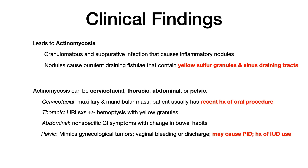Actinomycosis can be cervicofacial, thoracic, abdominal, or pelvic. On your exam, it's very likely they go after cervicofacial actinomycosis, as that is the classic manifestation. In cervicofacial actinomycosis, you tend to get swelling around the jaw — in the maxillary and mandibular region. Usually the patient will have a history of some type of oral procedure, dental caries, or periodontitis, because the mucosal barrier in that area is breached, allowing Actinomyces to cause a localized swelling or inflammation in the jaw.